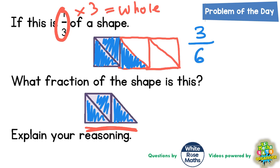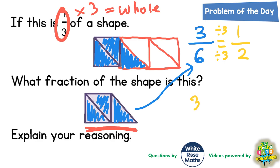So one answer to this is: what fraction of the whole shape is this? Well, it is three-sixths. But also, if you're being really clever, you'll notice that three out of six simplifies by dividing both the numerator and denominator by three. Three into three goes once, three into six goes twice. So either of those two answers are acceptable — three-sixths or one-half, if you simplify it.